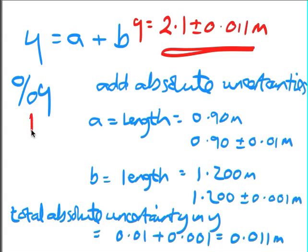If you did want to make it a percentage, then what you would have to do is do the normal calculation for percentage to convert the absolute: 0.011 divided by 2.1 times by 100,